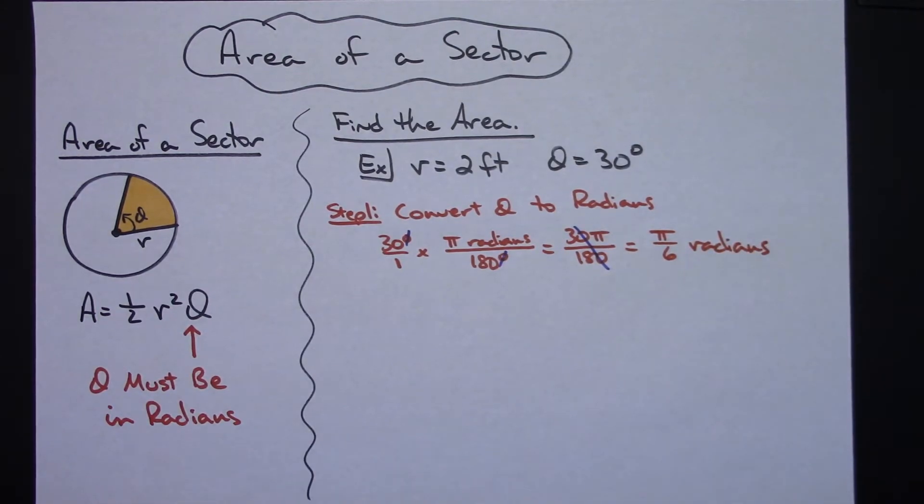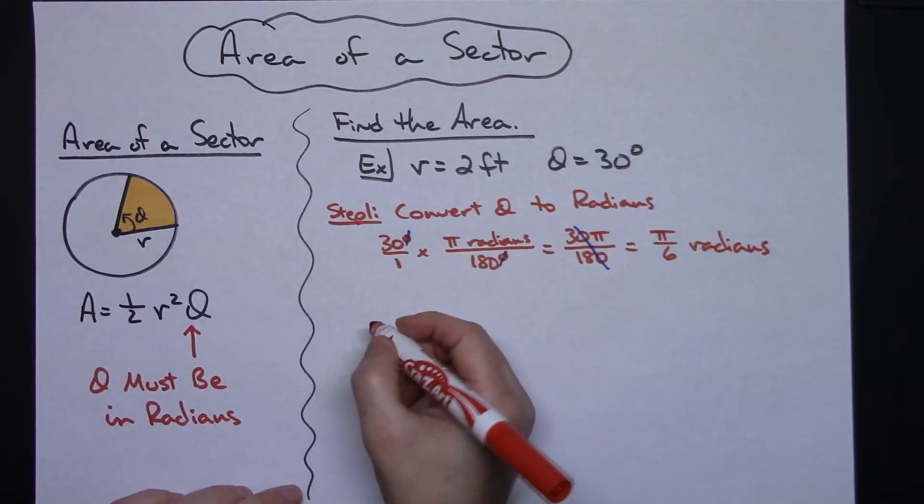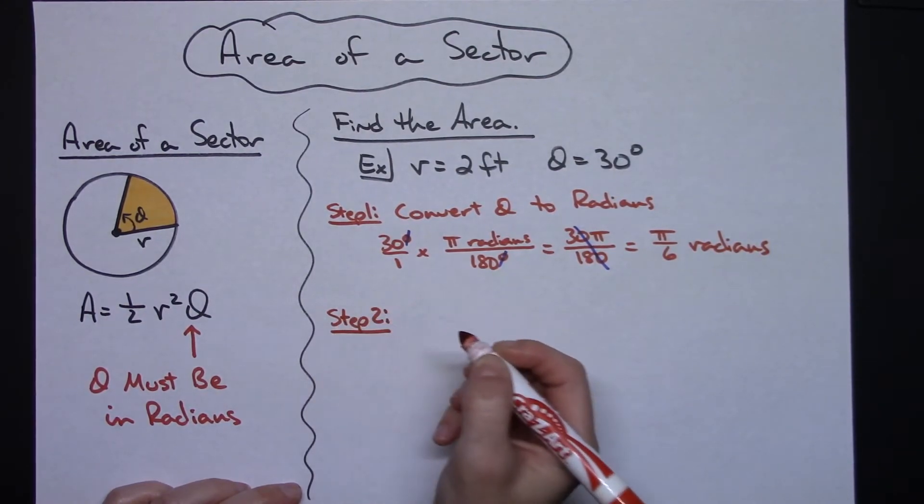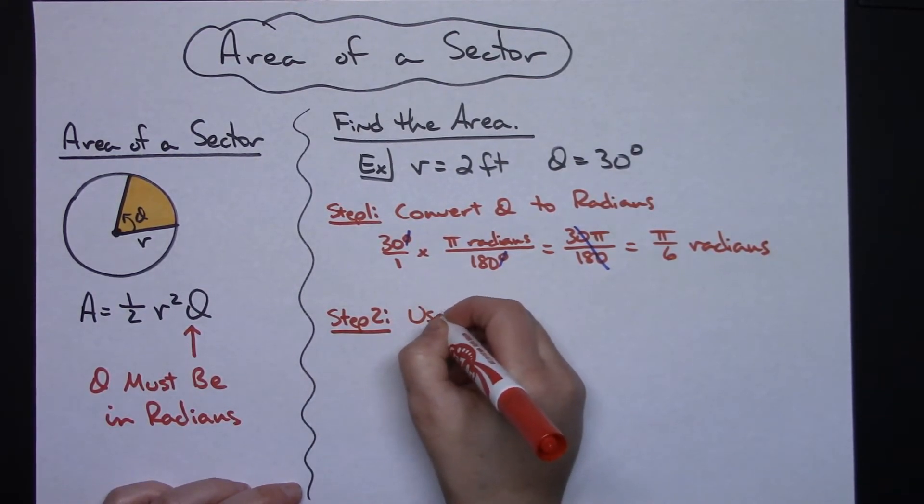Not a lot of detail on that because I am assuming that you've got some background in trig and that you can do degrees to radians, radians to degrees. Now step two. Now that I know what my theta is, I can use my formula.